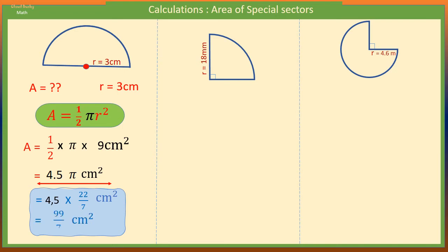The area of this quadrant with radius 18 millimeters is given by A = 1/4 πr². So we have A equals one quarter of π times radius times radius.